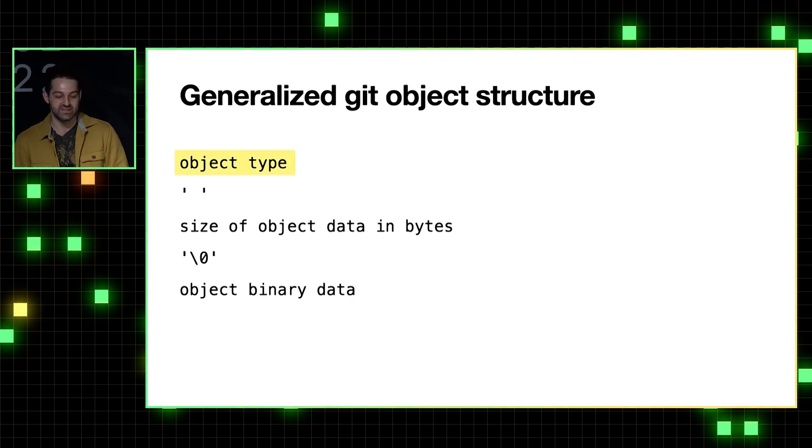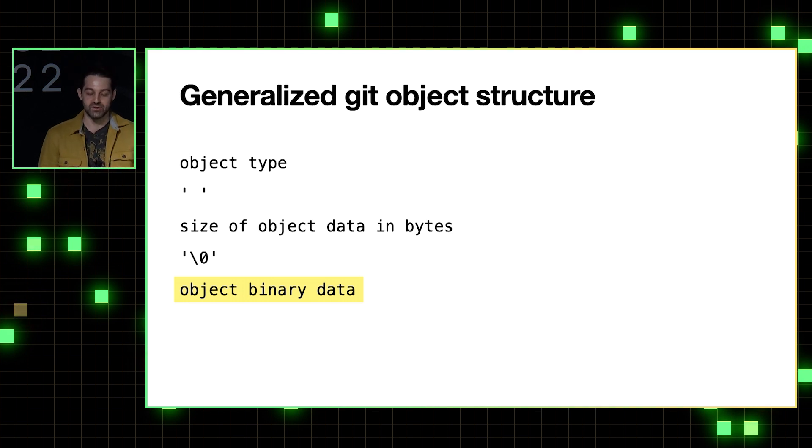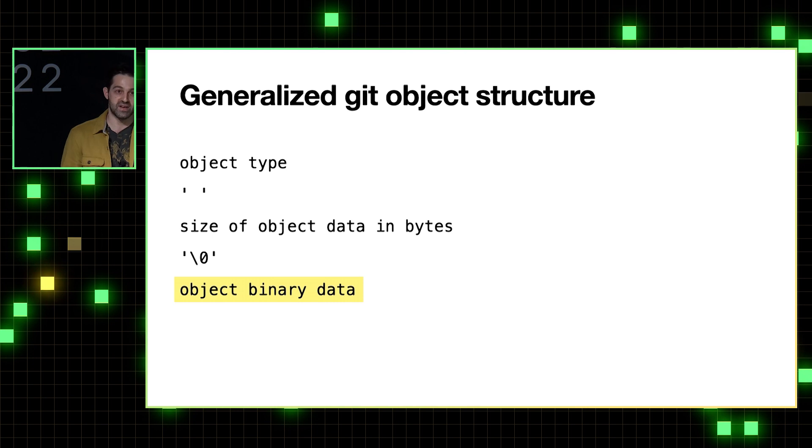So yeah, let's start with Git's objects. And all of Git's objects have this kind of generalized structure, starting with the object's type. And that will either be blob, tree, or commit, depending on the type of object. Then we have the size of the object in bytes. And lastly, the object's binary content. And you can think of this whole thing as like a standard template that Git uses to build its objects. And it will build up objects in this format in memory before writing them to the object database.